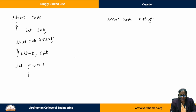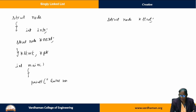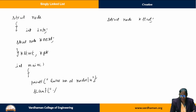Now let me explain the concept of how to create a linked list with n nodes. Firstly, I need to know how many nodes — what the number of nodes is. So: printf, enter number of nodes; scanf, percentage d, ampersand n.